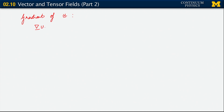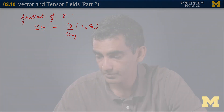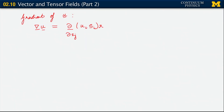We will write it as grad u, using the same Greek letter nabla. By this we mean the following: we are talking of taking gradients, and we'll write that in coordinate notation as a derivative with respect to xj of u. But u itself, remember, is ui ei, because u itself is a vector. The gradient, as we saw before when applied to a scalar, also introduces a further vectorial aspect to it.